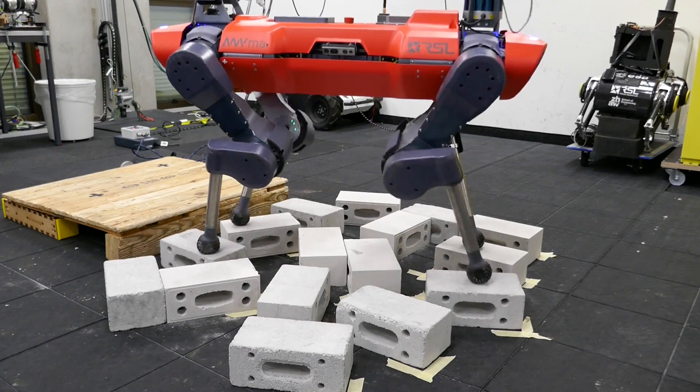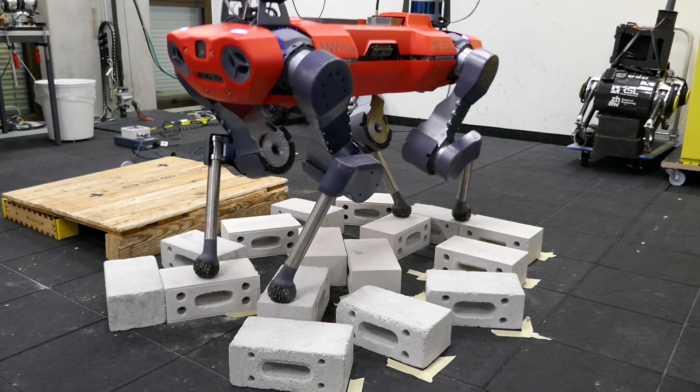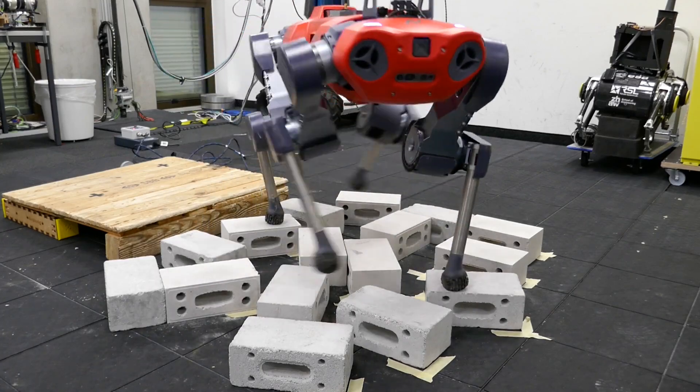Dynamic locomotion over rough terrain requires a controller that can reason about stability of a gait while simultaneously respecting foothold constraints set by the terrain.